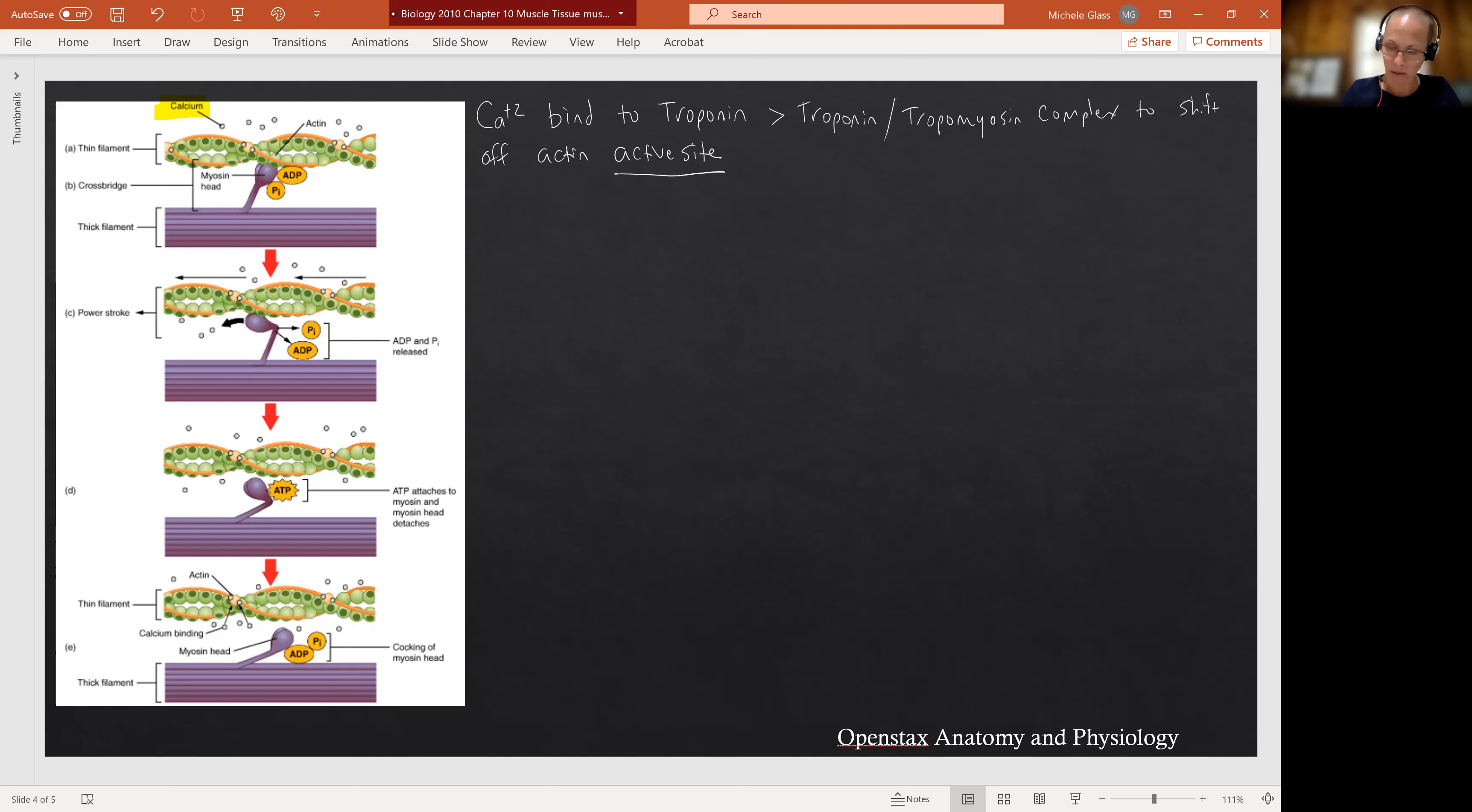So we can call it an active site or we can call it the myosin binding site. In our previous labeling, it was called a myosin binding site. Some texts will call it an active site. The active site is this spot where the myosin can grab hold of the actin. At rest, the troponin-tropomyosin complex is sitting on top of that active site. When the calcium comes in and binds, it changes the shape of the troponin. The troponin then is no longer holding the tropomyosin in place and the whole thing shifts. And when it shifts, those active sites become available.